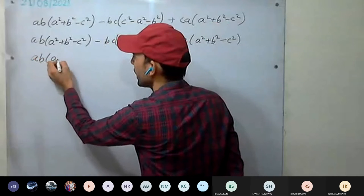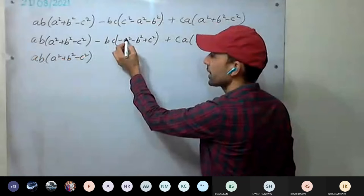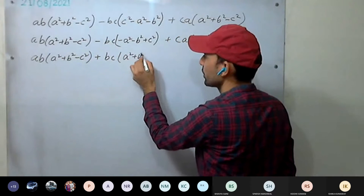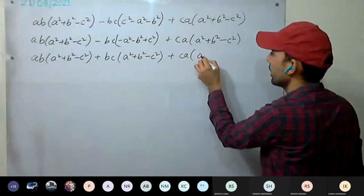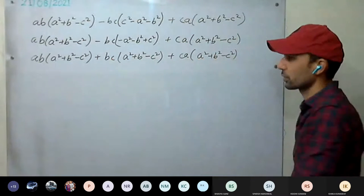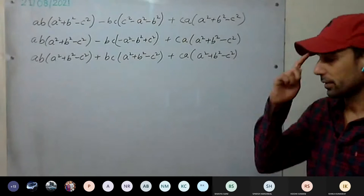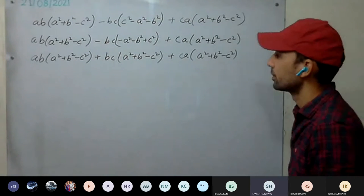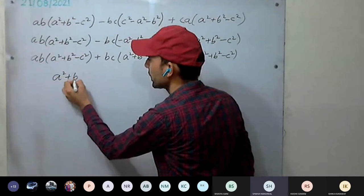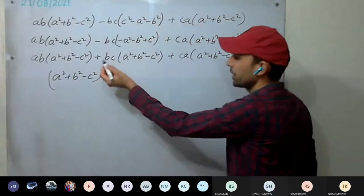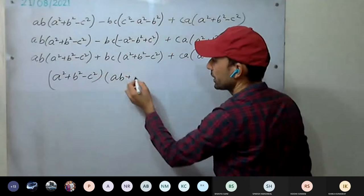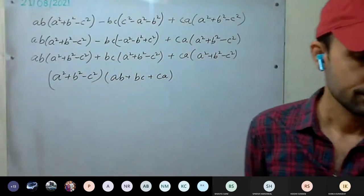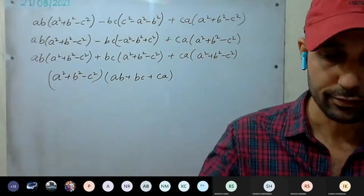Rewriting: ab(a²+b²−c²) + bc(a²+b²−c²) + ca(a²+b²−c²). Now take (a²+b²−c²) outside as the common factor. What remains inside is ab + bc + ca. So the final answer is (a²+b²−c²)(ab + bc + ca).